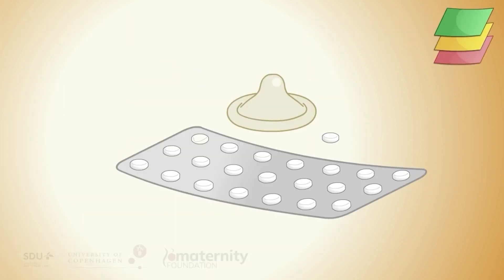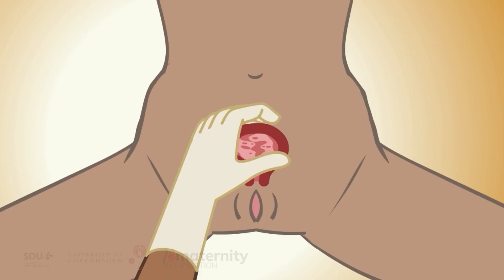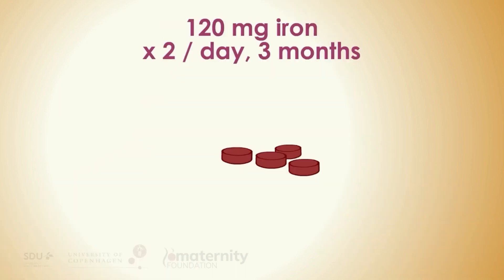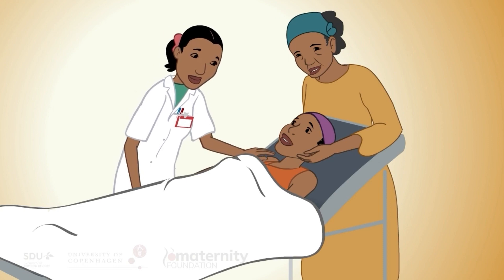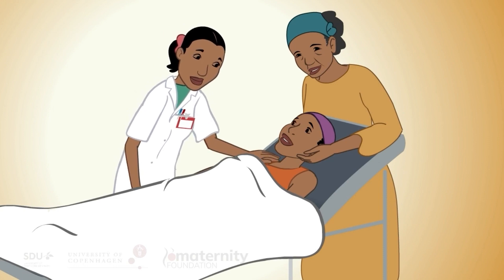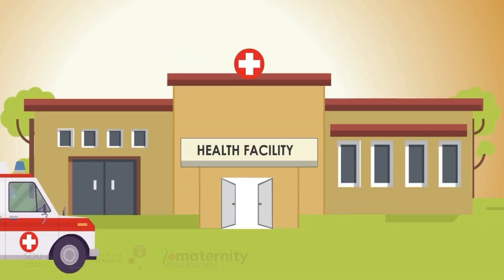All women should also receive contraceptive information and be offered counseling for and methods of post-abortion contraception. Immediate initiation of contraception following abortion has been shown to both improve adherence and reduce the risk of unintended pregnancy. If needed, the woman should be provided with iron tablets for anemia, any pain medications, as well as emotional support. In the absence of complications, most women can leave the health care facility as soon as they feel able and their vital signs are normal.